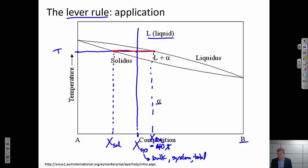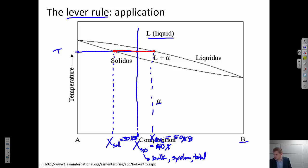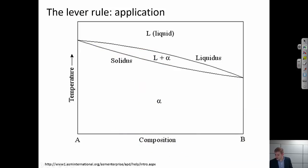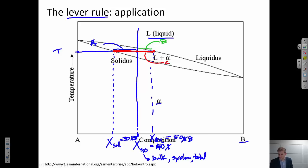To apply the lever rule we need all these numbers. The liquid composition looks like about 50 percent component B, and the solid is about 30 percent component B — we'll use that to make the math easier. To apply the lever rule I need to know three lengths: the overall length C, the length from the solid composition to the system composition, which I'll call A, and the length from the system to the liquid composition, which I'll call B.